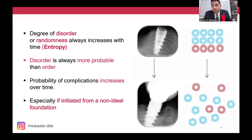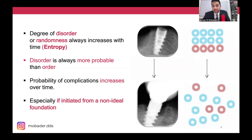I would like to start by talking about randomness. Usually, as a law in nature, in a closed system randomness tends to increase — in other words, disorder tends to increase. This is usually the law of entropy: in a closed system, disorder tends to increase, especially if initiated from a non-ideal foundation.